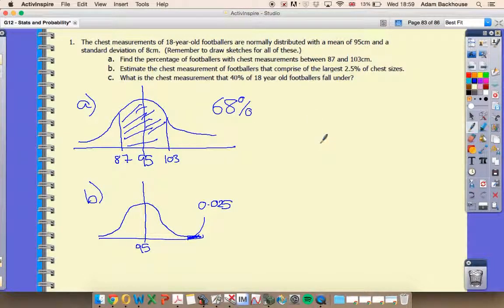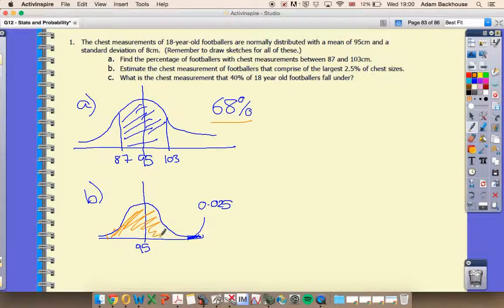We can also do this problem with standard deviations. One standard deviation was 68%, plus or minus one SD from the mean. Plus or minus two standard deviations from the mean, we're looking at 95% of our population. So if I've used up 95% in two standard deviations, I must have 5% left over, and 2.5% will be up here, 2.5% down here.